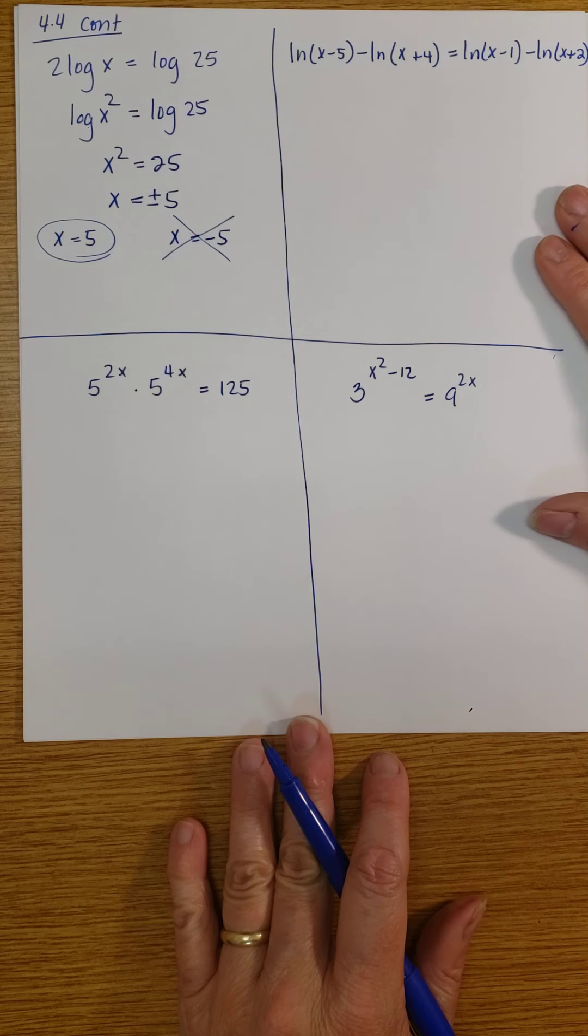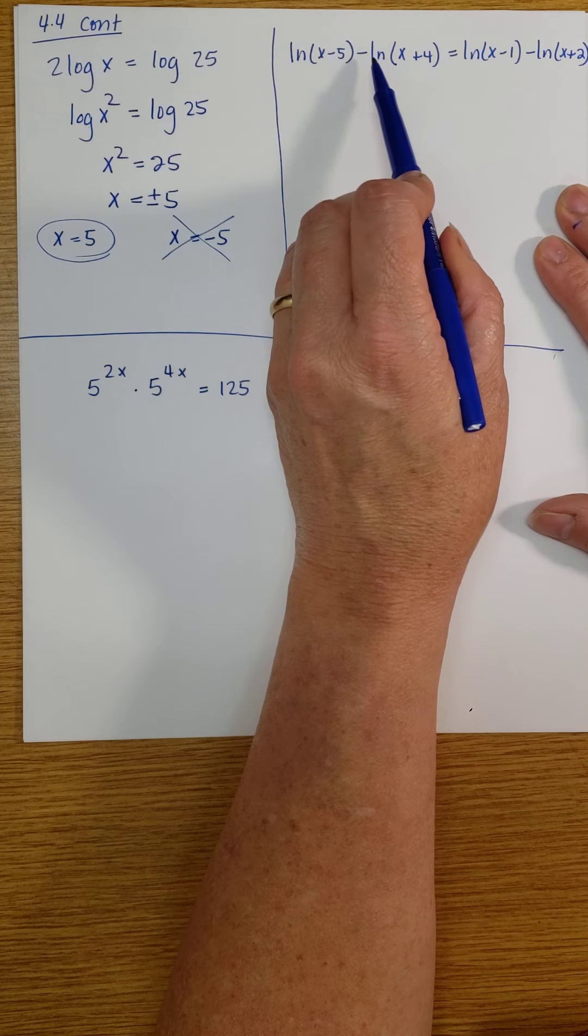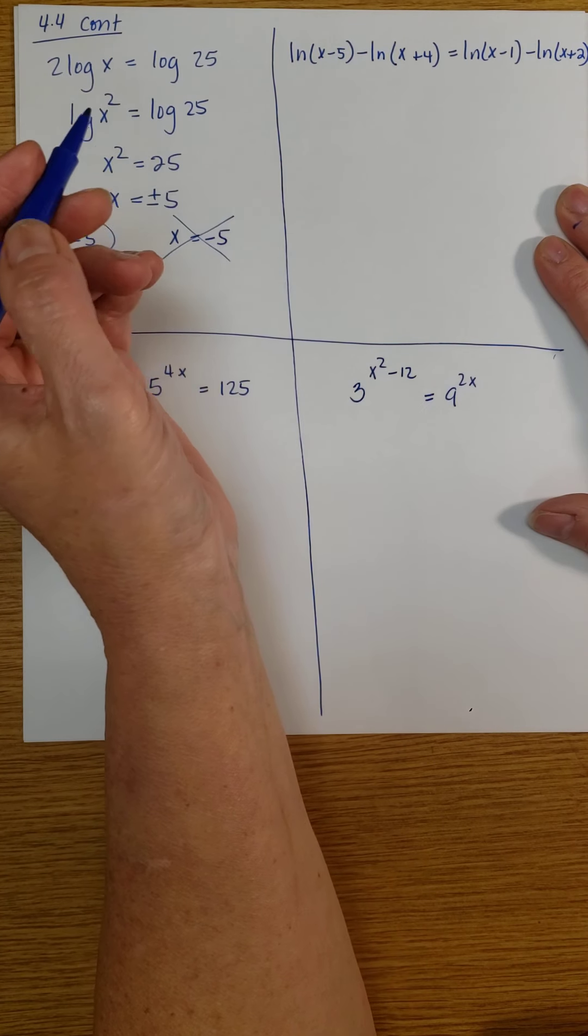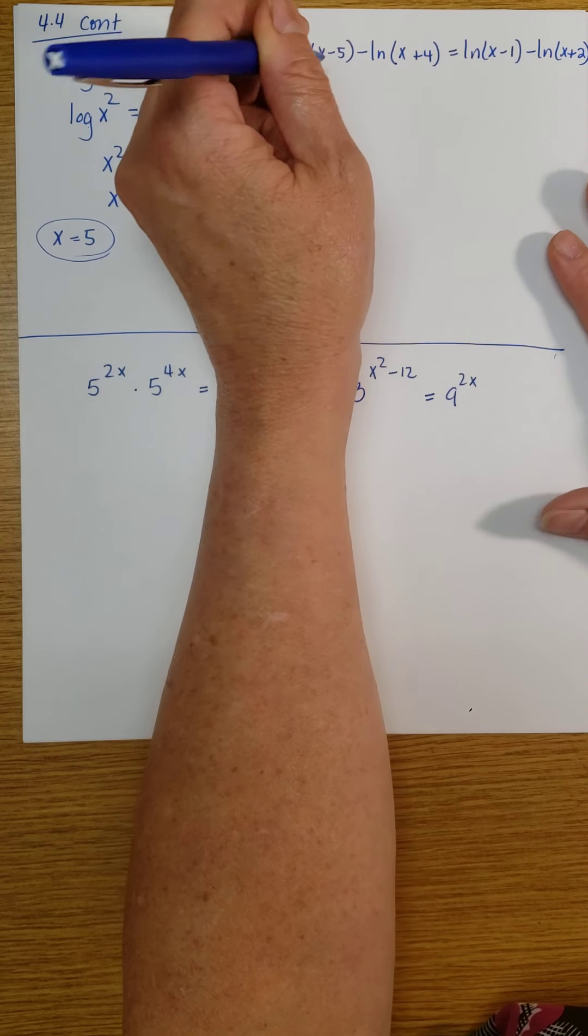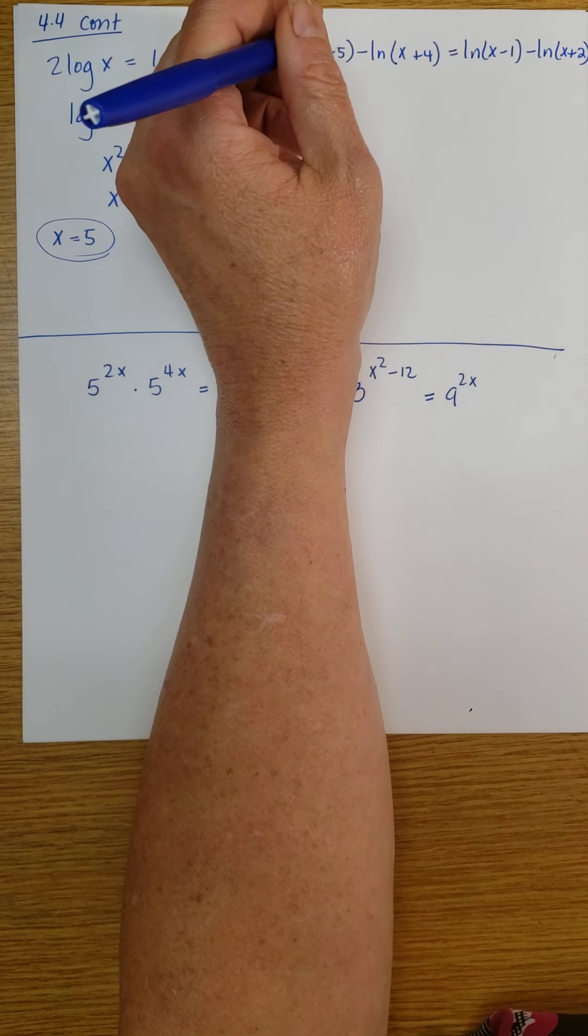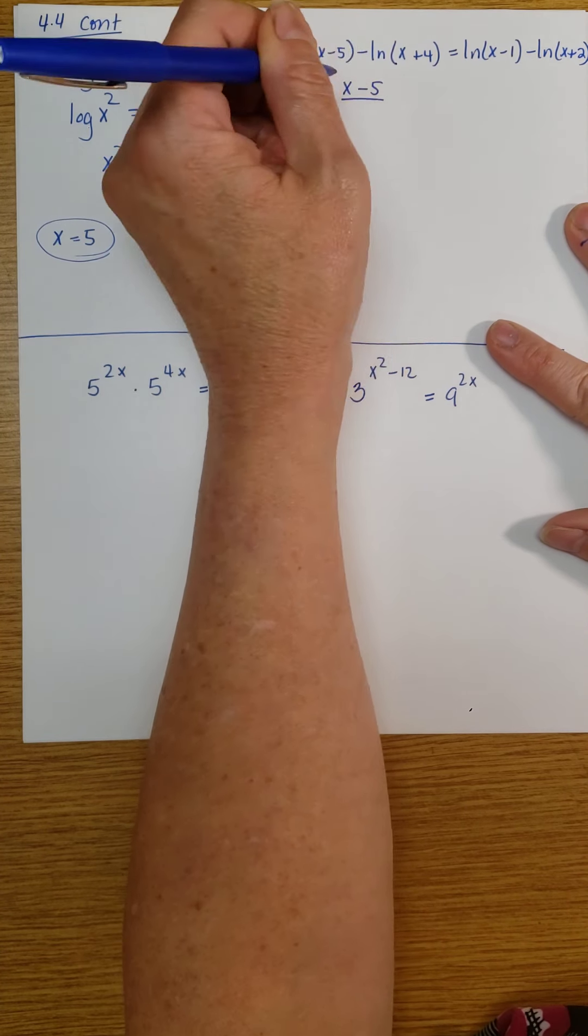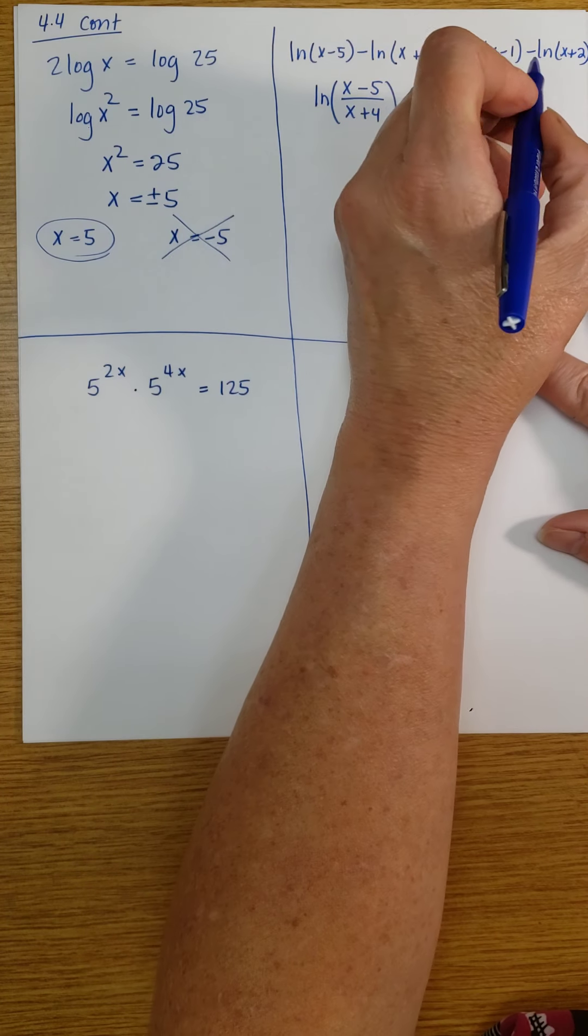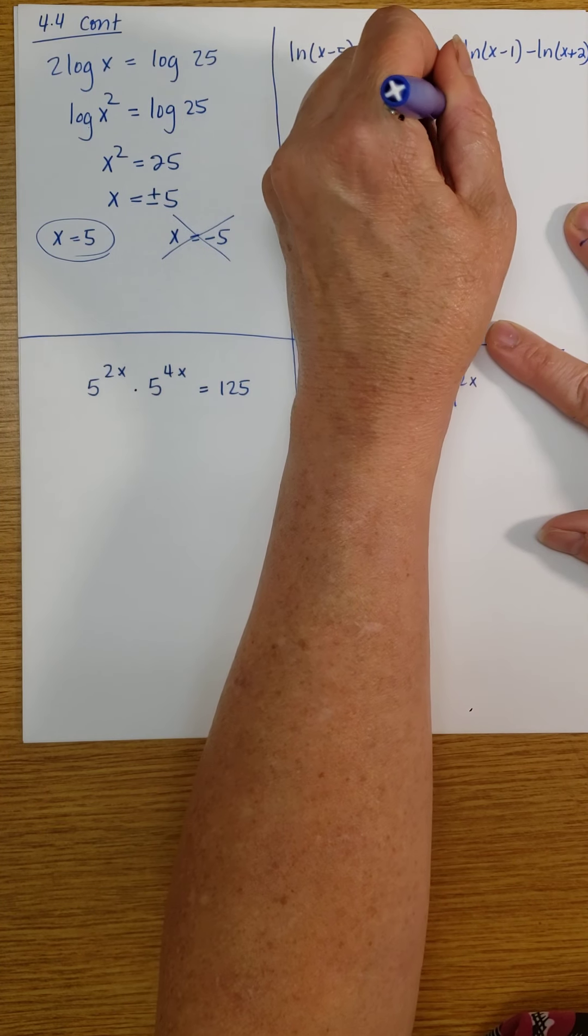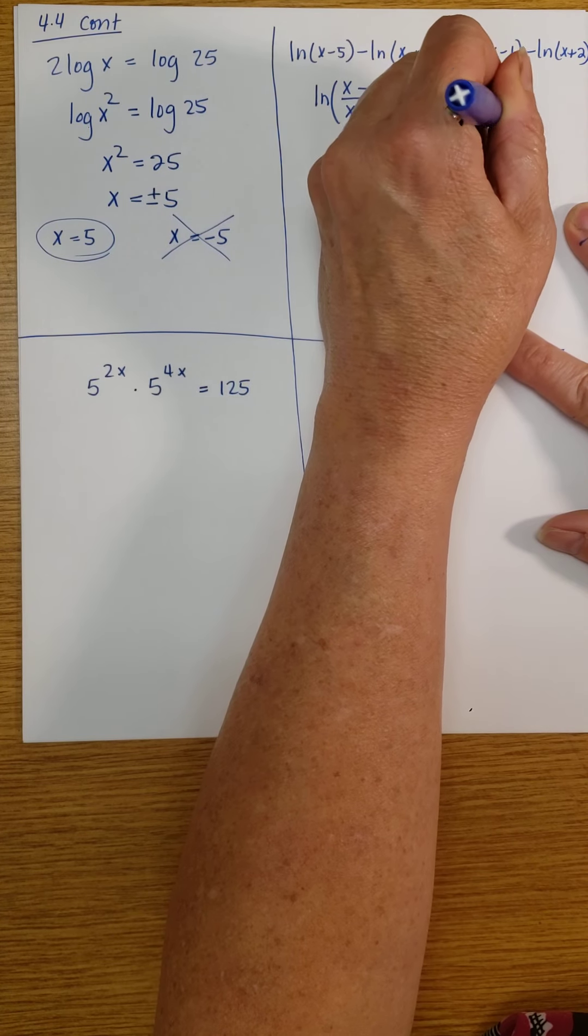Here I'm going to condense logs again. Here we have a difference on either side of the equation of two natural log functions. So when I combine that, remember the difference of logs gives me the log of the quotient. So this is going to be the natural log of x minus 5 over x plus 4. And the right side, because of that negative,